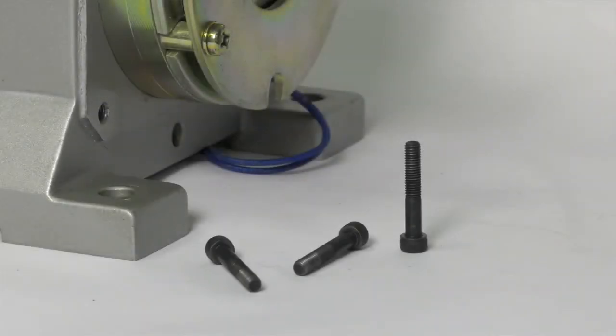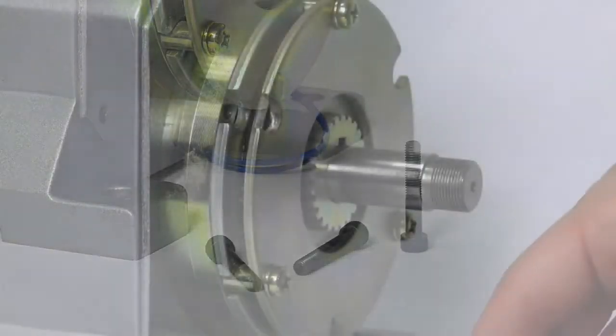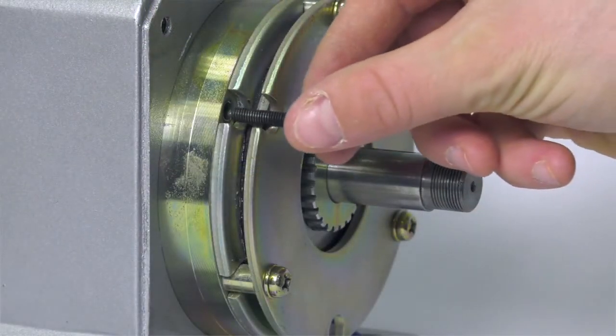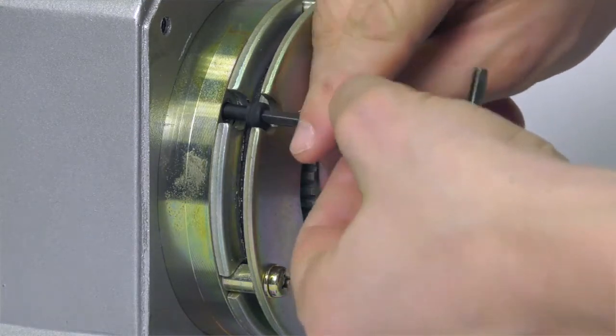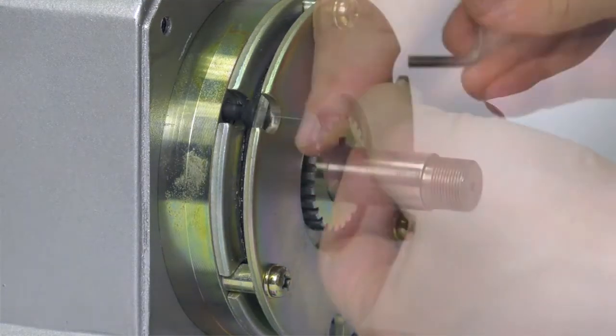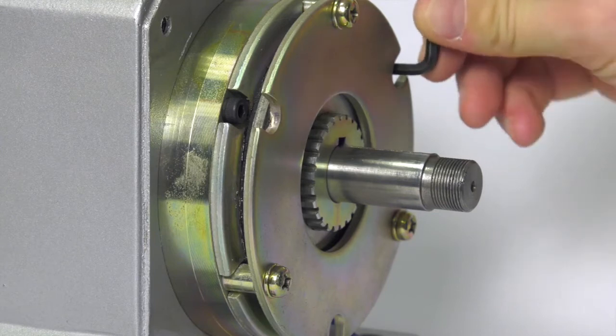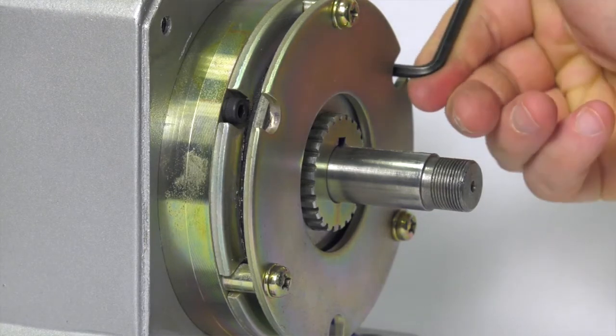Most brakes require three mounting bolts that are not supplied by Ogura. Insert the mounting bolts to lock down the brake housing. Mounting bolts will vary in size depending upon brake hole diameter and total width of brake body and mounting surface.